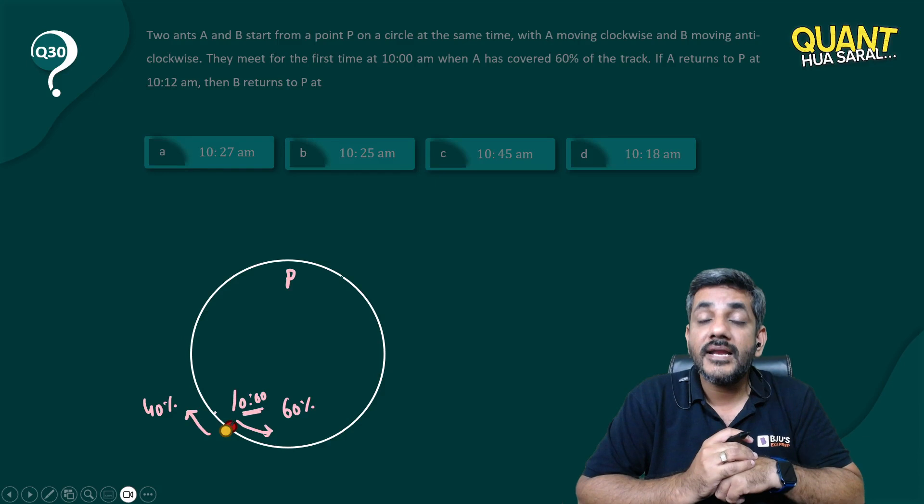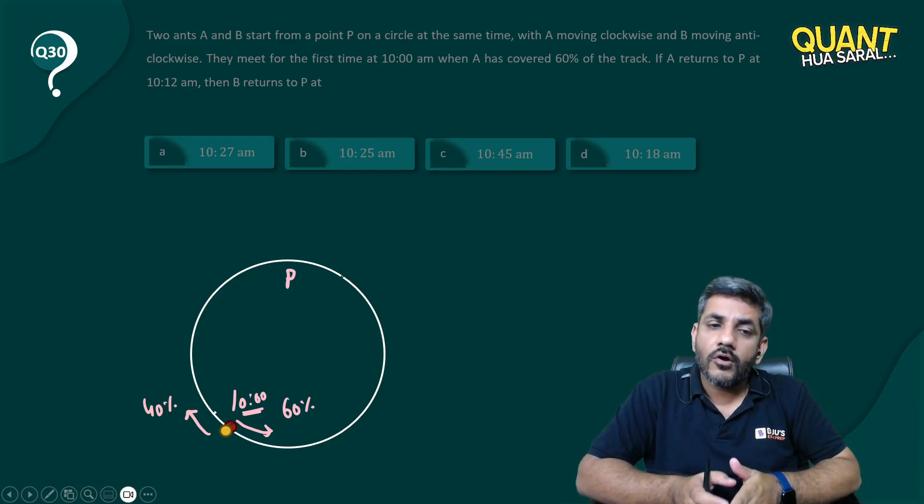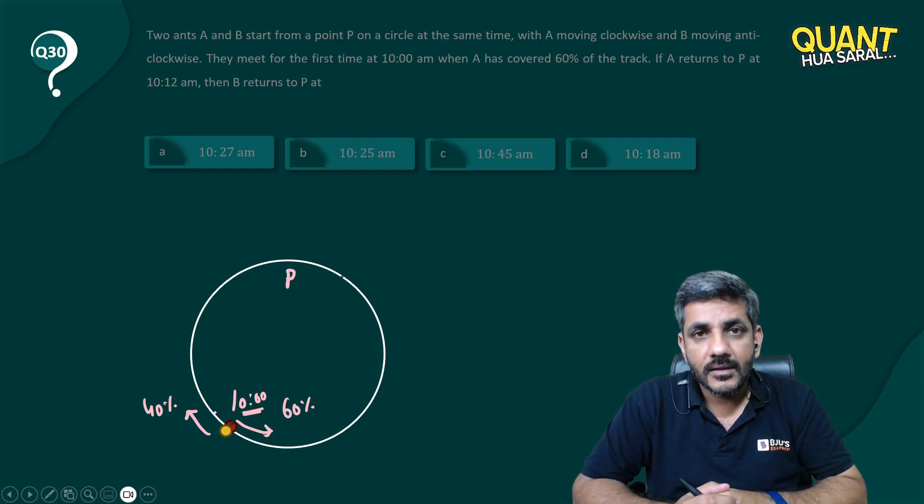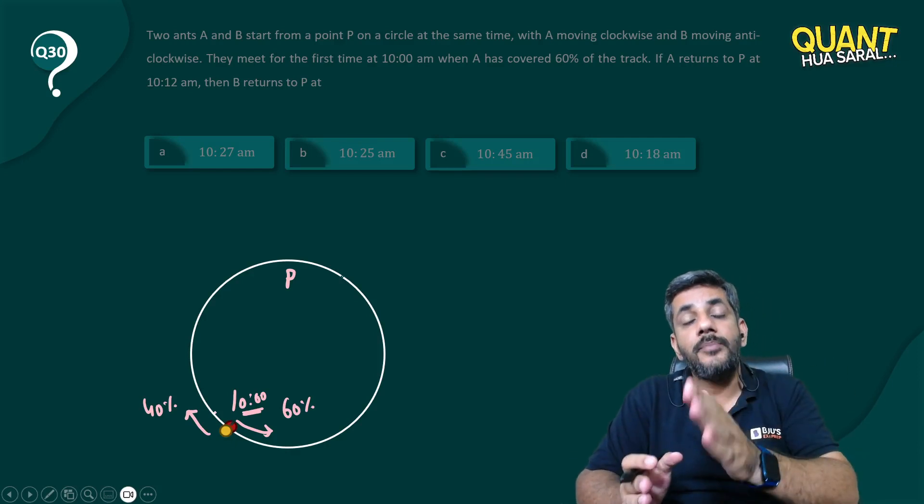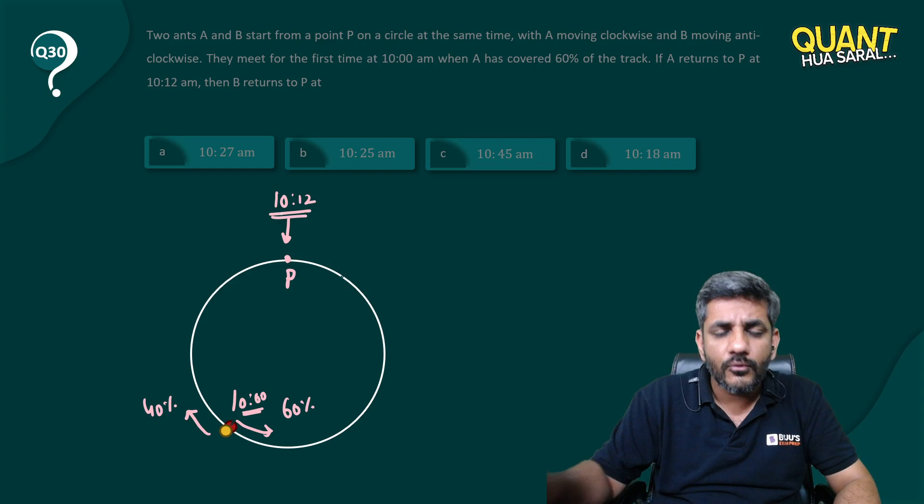This is also given to us - they met at this point at exactly 10 o'clock. Now from this point they start running again. A returns to P at 10:12 am, so A returns here at 10:12 am. The important point is...